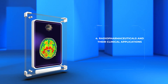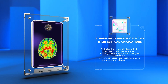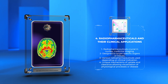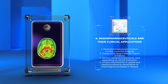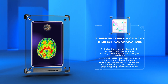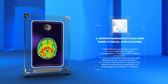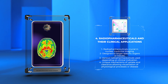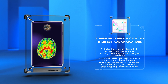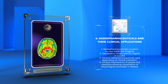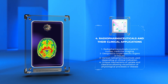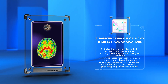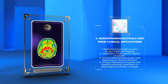Radiopharmaceuticals play a crucial role in nuclear medicine imaging and are carefully designed to target specific organs or tissues of interest. Depending on the clinical indication, various radiopharmaceuticals are used, such as technetium-99m (Tc-99m) for imaging different body systems, fluorodeoxyglucose (FDG) for oncological applications, and iodine-131 (I-131) for thyroid disorders. Different radiopharmaceuticals have unique mechanisms of uptake and clearance, allowing for the visualization of specific physiological processes or disease states.